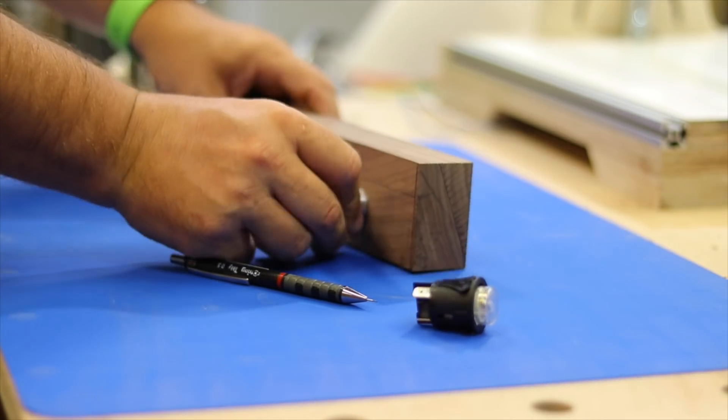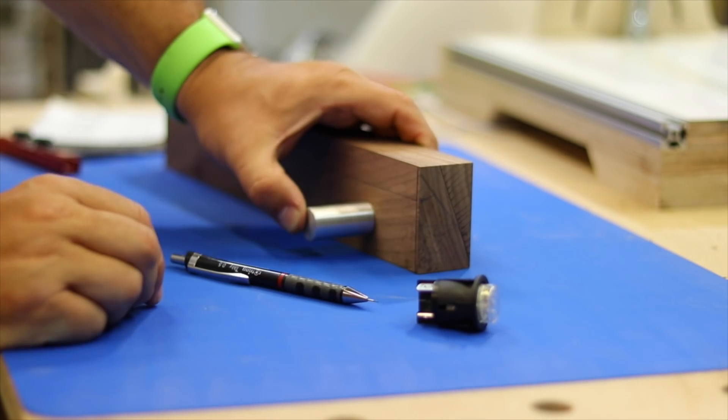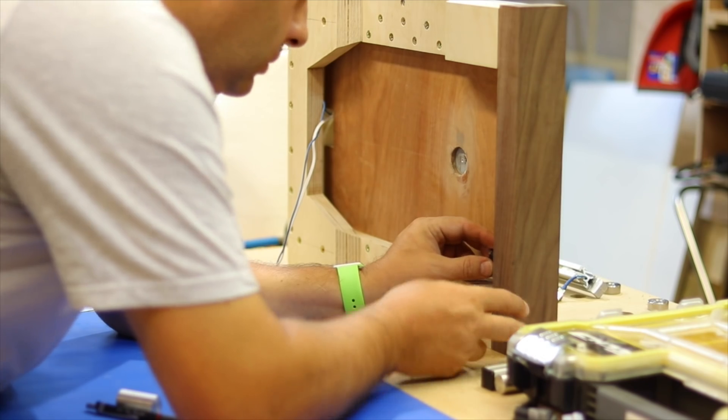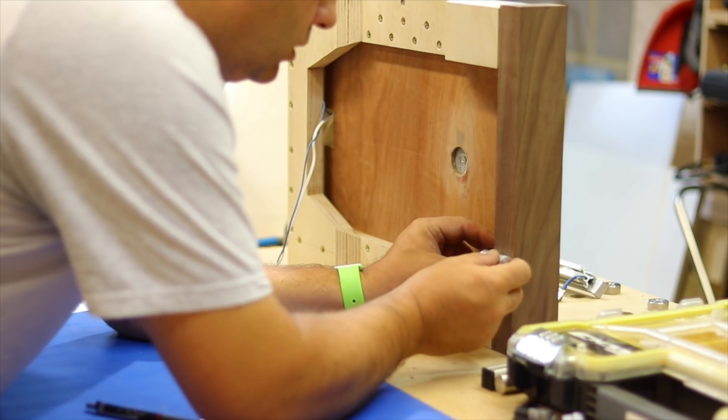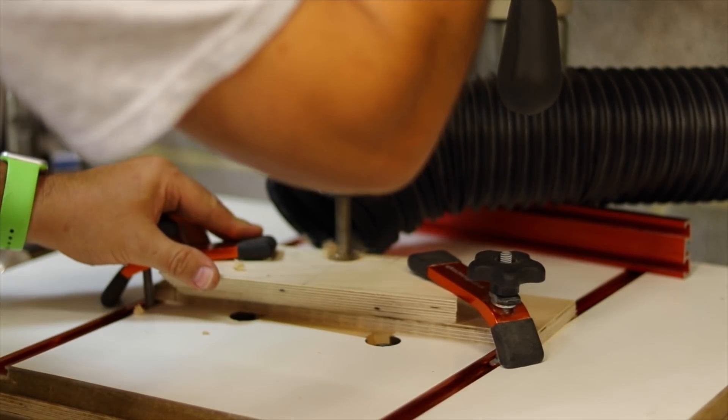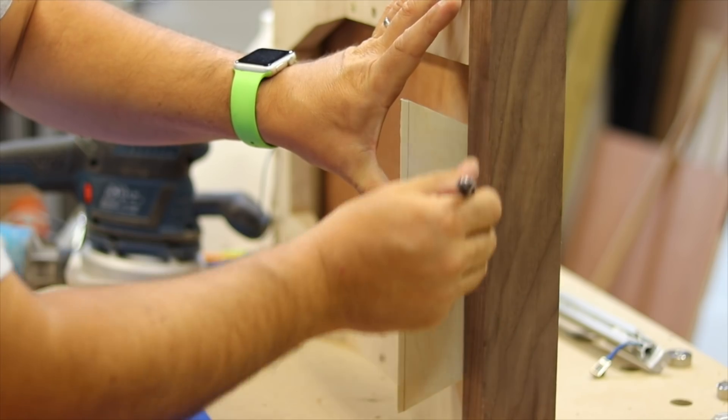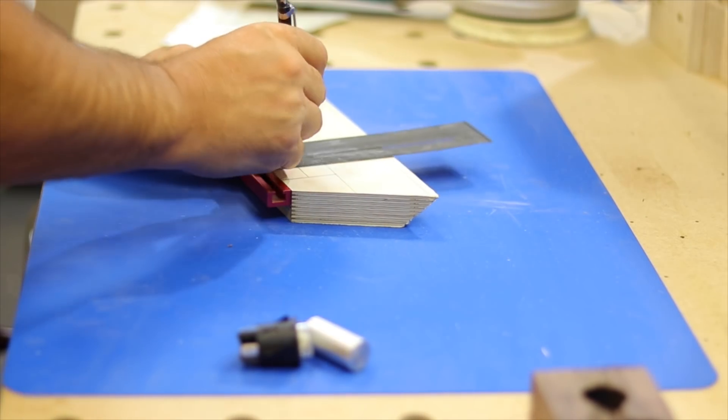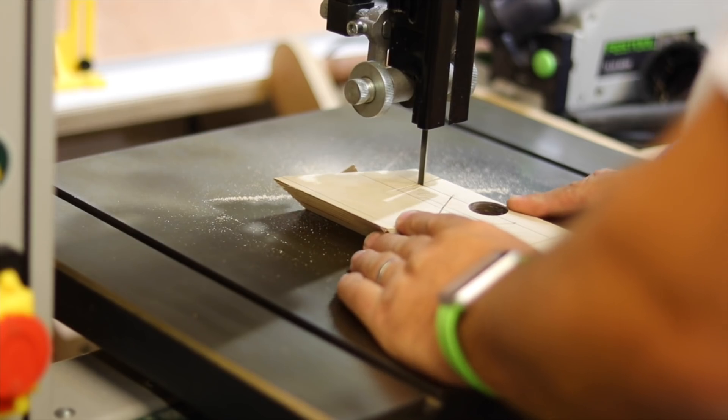I dimension and sand the walnut for the front face and now I'm just working out button positions and the like. I decided to use a latching button and now I'm just creating a holder for that.